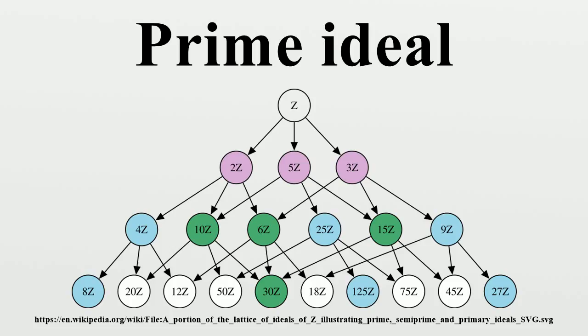Use: One use of prime ideals occurs in algebraic geometry, where varieties are defined as the zero sets of ideals in polynomial rings. It turns out that the irreducible varieties correspond to prime ideals.